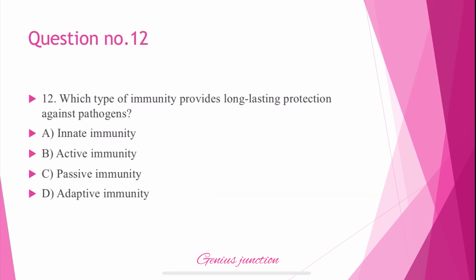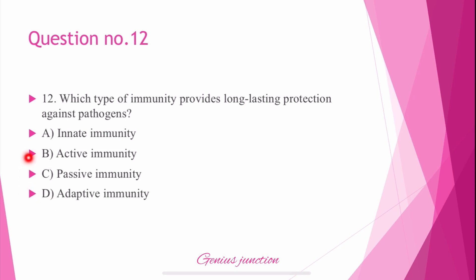Question number 12: Which type of immunity provides long-lasting protection against pathogens? Options are: innate immunity, active immunity, passive immunity, and adaptive immunity. The right answer is B — active immunity. Active immunity provides long-lasting protection against pathogens.